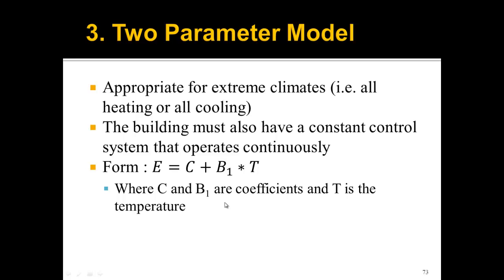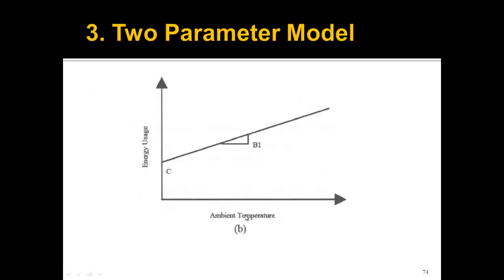The form here is that the energy use over a certain time period equals some constant C plus some constant B₁ times the temperature. An example of how to get these two constants is just like when we saw linear modeling. We would put our energies, our energy use, and our temperatures in Excel, and we'd get the two constants from that best fit line. How this looks in graphical format is that, in this case, as the ambient temperature goes up, the energy usage goes up. And how much it goes up is the slope, B₁. And if the ambient temperature is really cold, the intercept here is C. That's the basic idea of a two-parameter model.